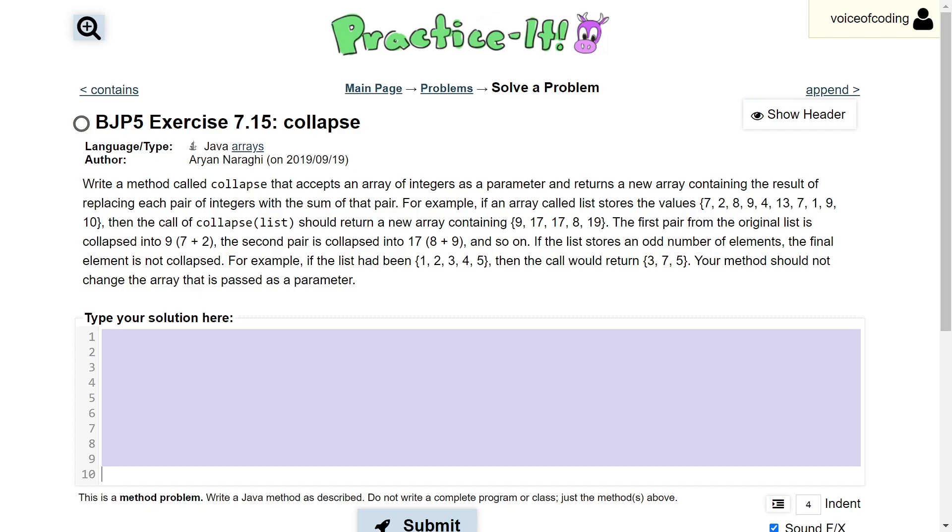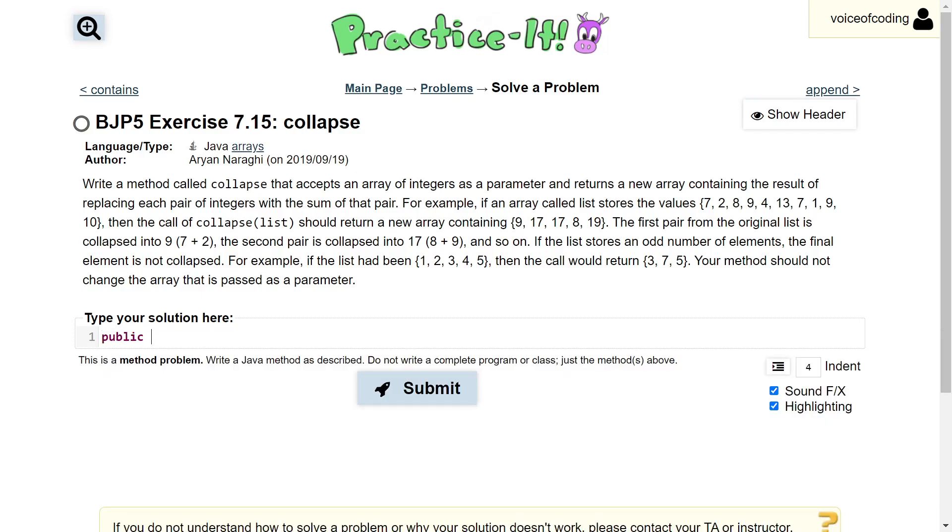First, we're going to start with creating our method header, so public static. And because we are returning an array of numbers, that is what our return type is going to be.